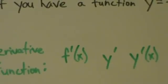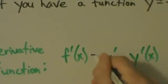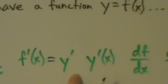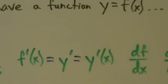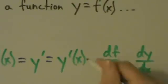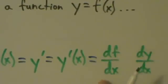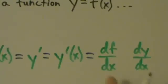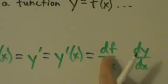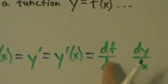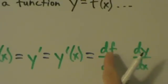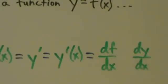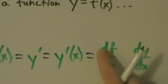You can say f primed of x. That's the same thing as saying y primed, or you could say y primed of x. Or, this is the kind of new one here, you could say df dx. So this means the derivative of f with respect to x. And it's not pronounced df over dx — some people will say that, but it's technically not correct. People will know what you mean, but it's technically pronounced df dx.